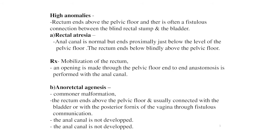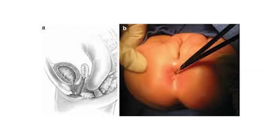The next high-level anomaly is anorectal agenesis, which is a commoner malformation than rectal atresia. The rectum ends above the pelvic floor and is easily connected with the bladder or with the posterior fornix of the vagina through fistulous communication. The anal canal is not developed. A good black-and-white picture on screen shows anorectal agenesis and rectal atresia.